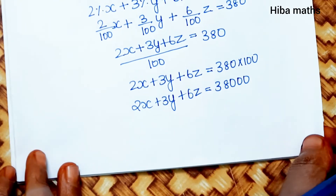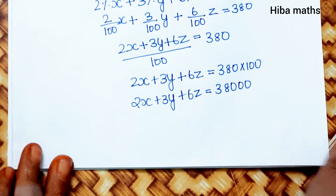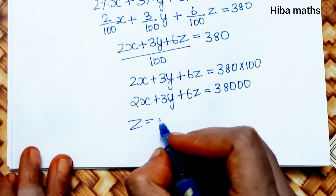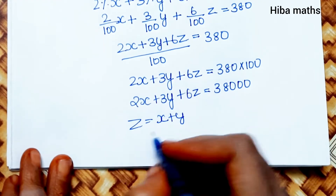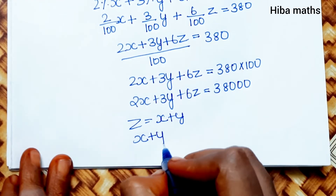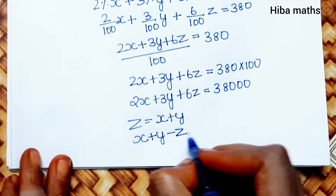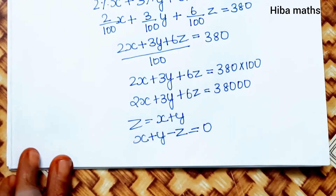The third equation: z equals x plus y. Rearranging, x plus y minus z equals 0. That is the third equation.